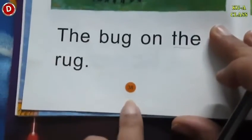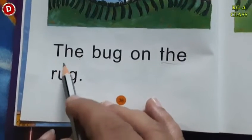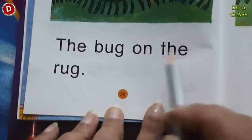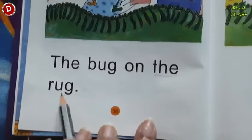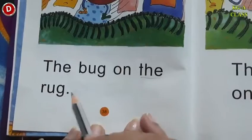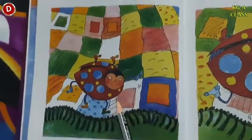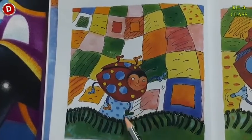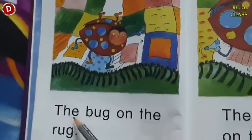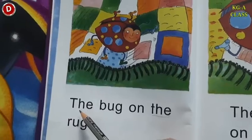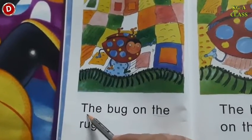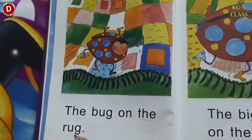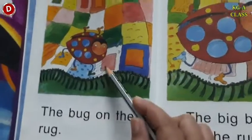Now turn the page. Come to page number 38. T-H-E — the, B-U-G — bug. On — on. T-H-E — the, R-U-G — rug. The bug on the rug. Children, look here — where is the bug? It is on the rug. Yeh rug ke upar hai — it is on the dary. T-H-E is a sight word. We will not use any phonic sound while reading it. The bug on the rug.